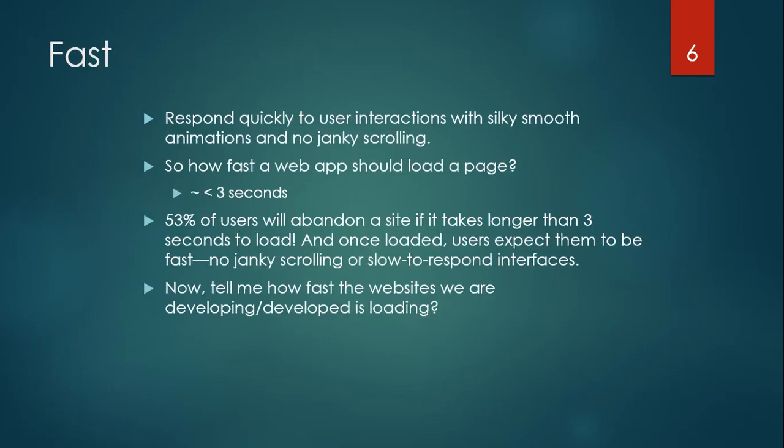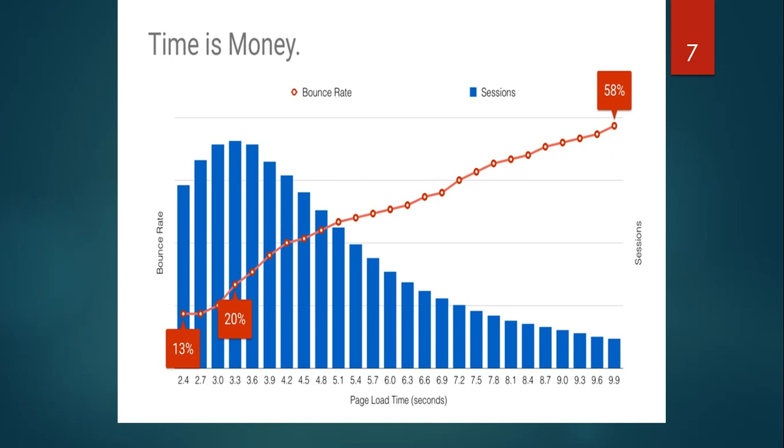What is Fast? When I say fast, it means that if you are opening a website it should render the first interactive component within three seconds. 53% of users will abandon a site if it takes more than three seconds. Once it is loaded, they will look for the objects or information they want. As a developer, we have to build websites that load within three seconds, or at least show some minimal information so users can understand what is happening instead of seeing an empty blank page.